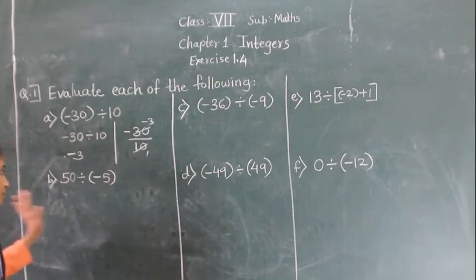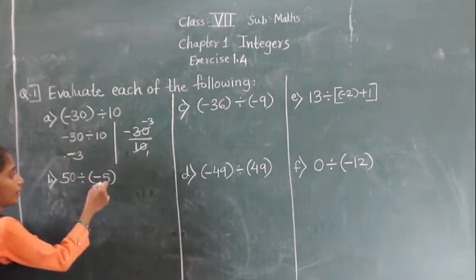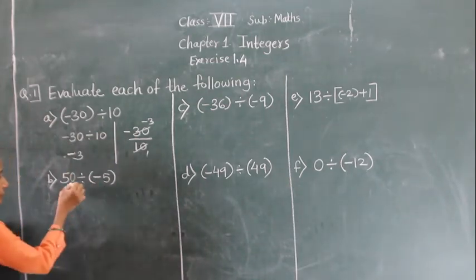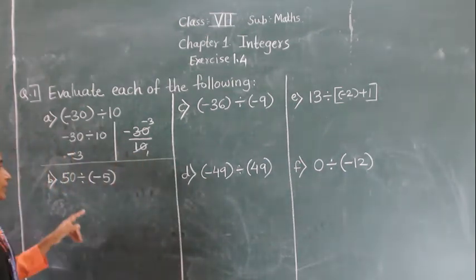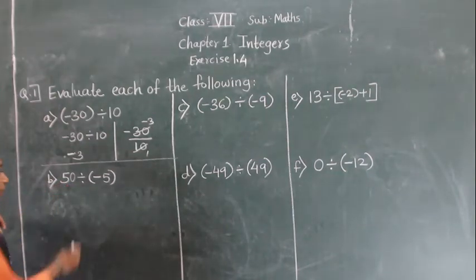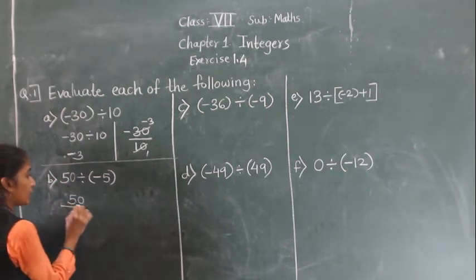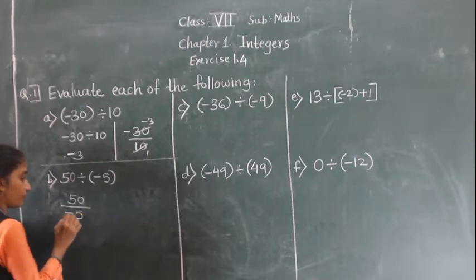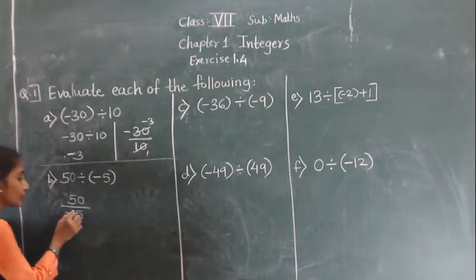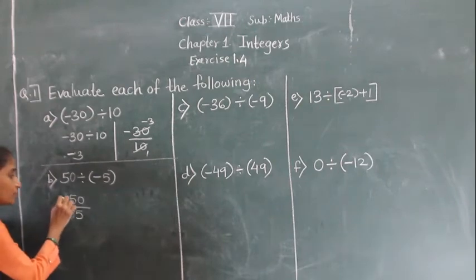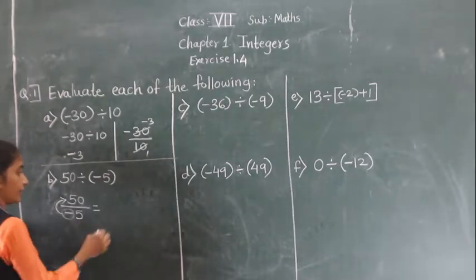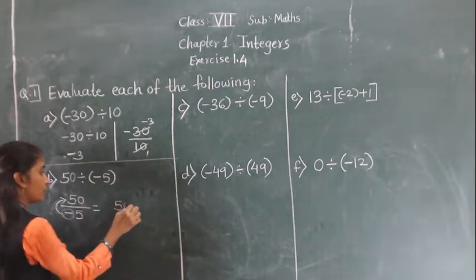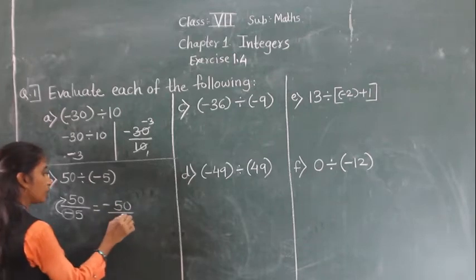Next, part (b): 50 divided by minus 5. What we can do here is shift the minus sign up. So we can write it as minus 50 upon 5.